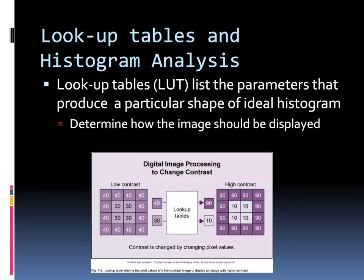Raw digital images have a linear exposure response and a wide dynamic range. Because of this, the image doesn't demonstrate anatomic structures well, as we saw in the previous slide. To enhance the anatomy, the pixel values are manipulated.